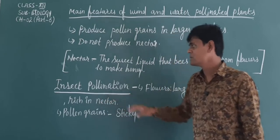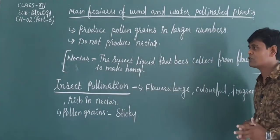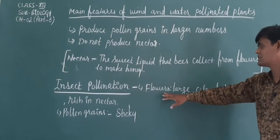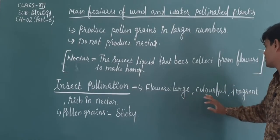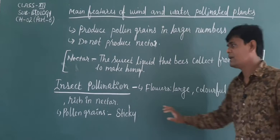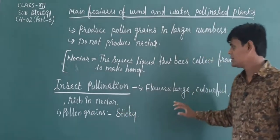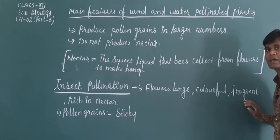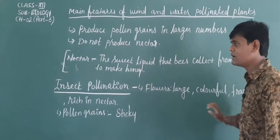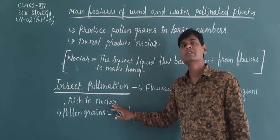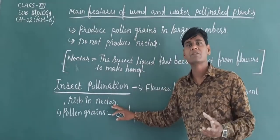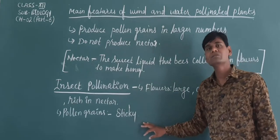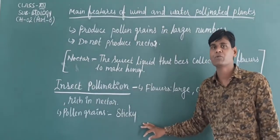Now we will discuss about insect pollination. In insect pollination, what adaptations are there in flowers? Flowers are large, colorful, fragrant, and rich in nectar. Their pollen grains are sticky.